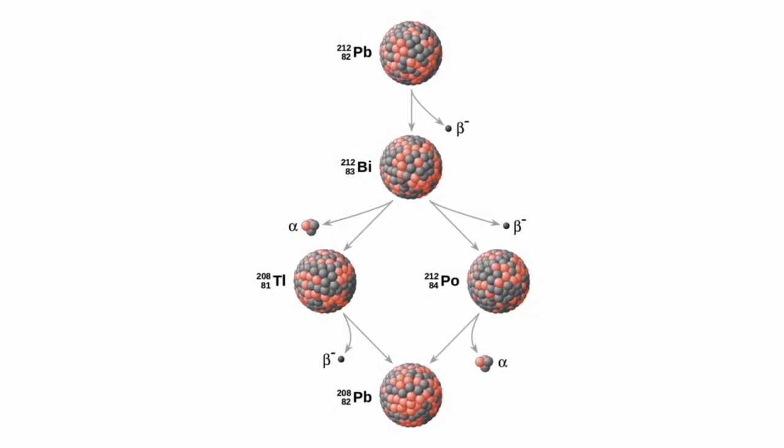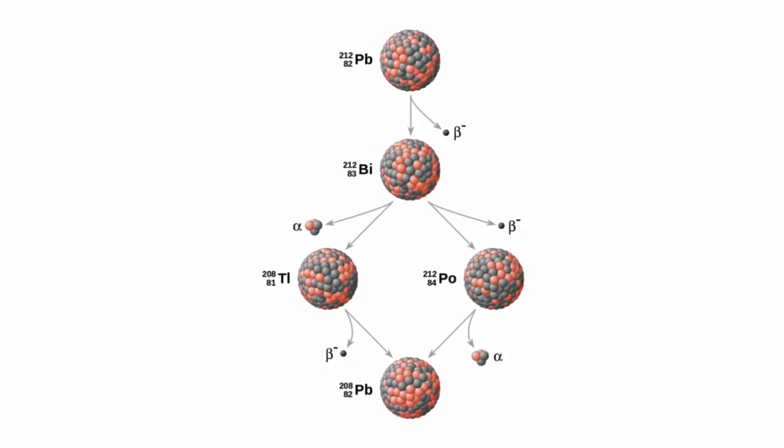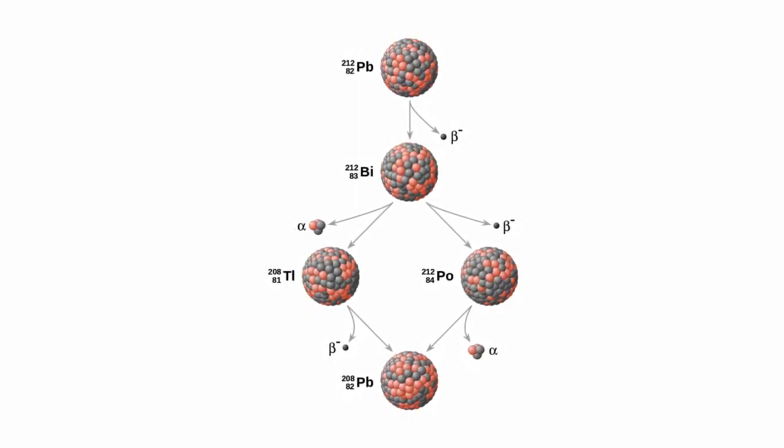Evolutionists claim that they have absolute proof of millions of years by resorting to radiometric dating. The trouble is, it's not reliable.